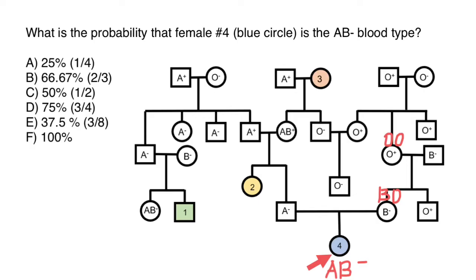Now let's find the genotype of the father. We cannot tell right away because he could be AA or AO. So let's analyze the parents of the father. We see that his mother is blood group AB. AB is made by only one genotype: AB. But his father's blood group is A, so it can be AA or AO.